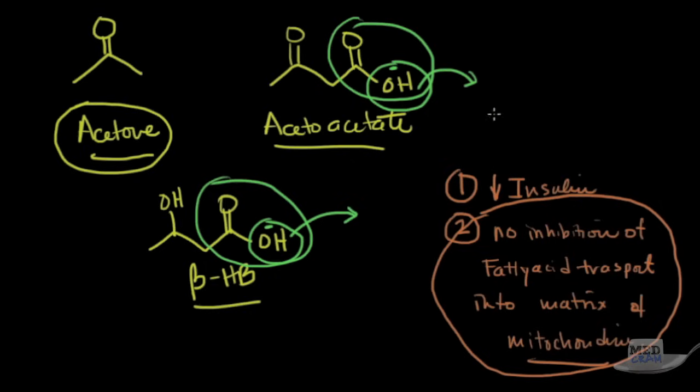That means beta oxidation is occurring, which as you recall, beta oxidation is simply when you have these long chain fatty acids getting chopped up into two carbon units. These two carbon units are then being fed into the Krebs cycle, but because there's so many of them, they start combining and forming these ketone bodies, and these ketone bodies are acidic.